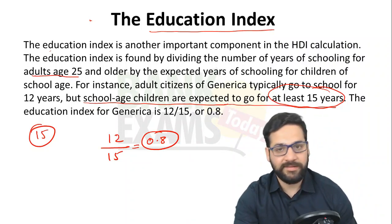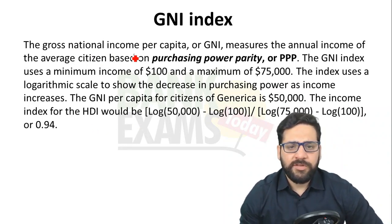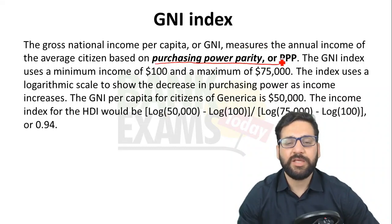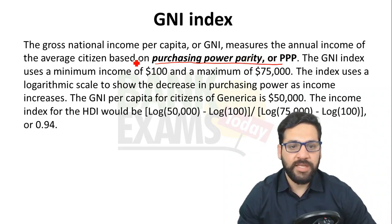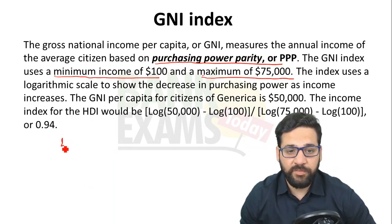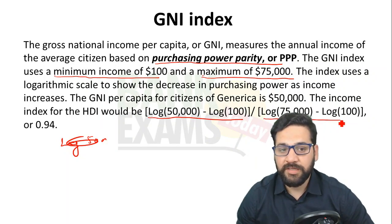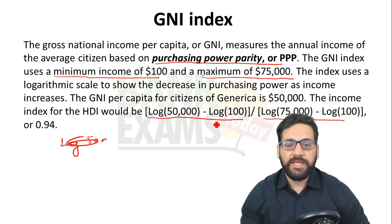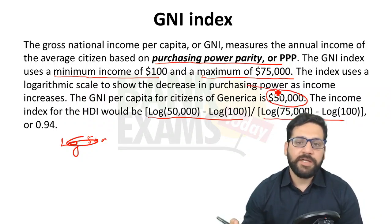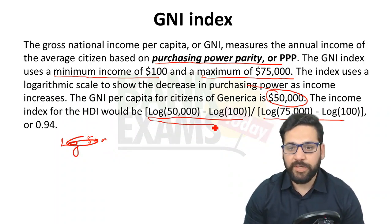For the GNI standard: the Gross National Income per capita is the annual average income of citizens based on purchasing power parity. The GNI index uses a minimum income of $100 and a maximum of $75,000. The formula uses logarithms: log(50,000) − log(100) divided by log(75,000) − log(100). In this example, the country Generica has a GNI per capita of $50,000.